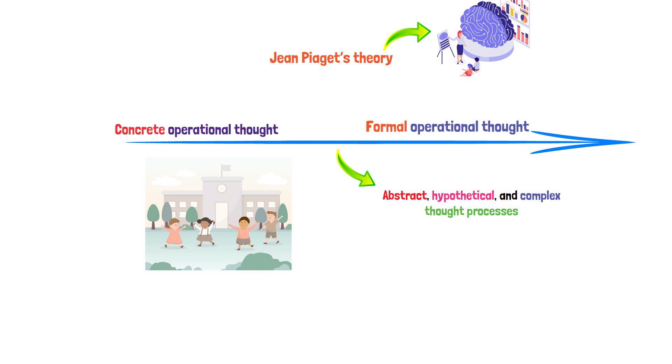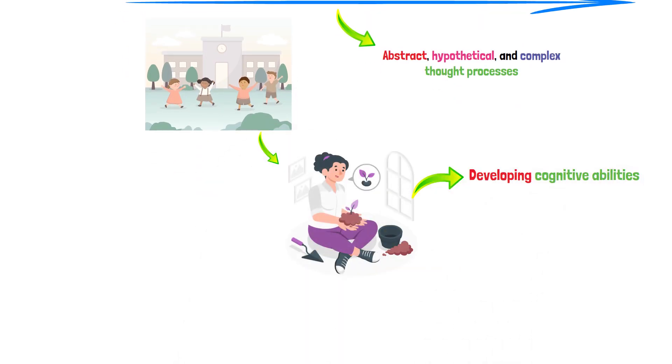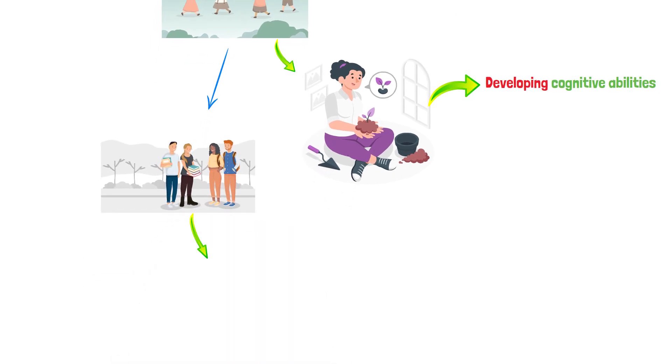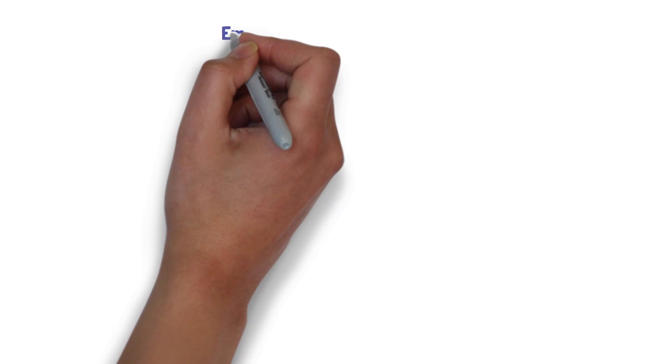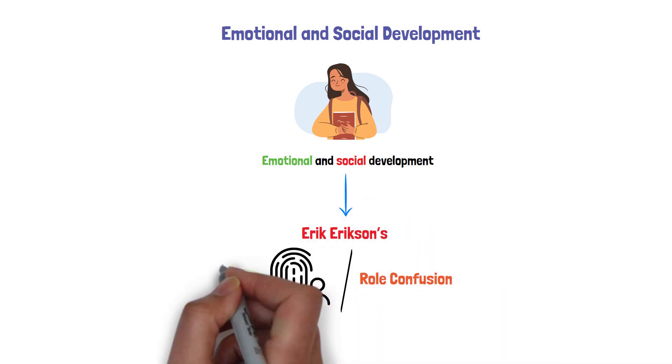School environments play a crucial role in nurturing these developing cognitive abilities, offering structured opportunities for adolescents to challenge their thinking and reasoning skills. Adolescence is a critical stage for emotional and social development, where Eric Erickson's concept of identity versus role confusion comes into play.